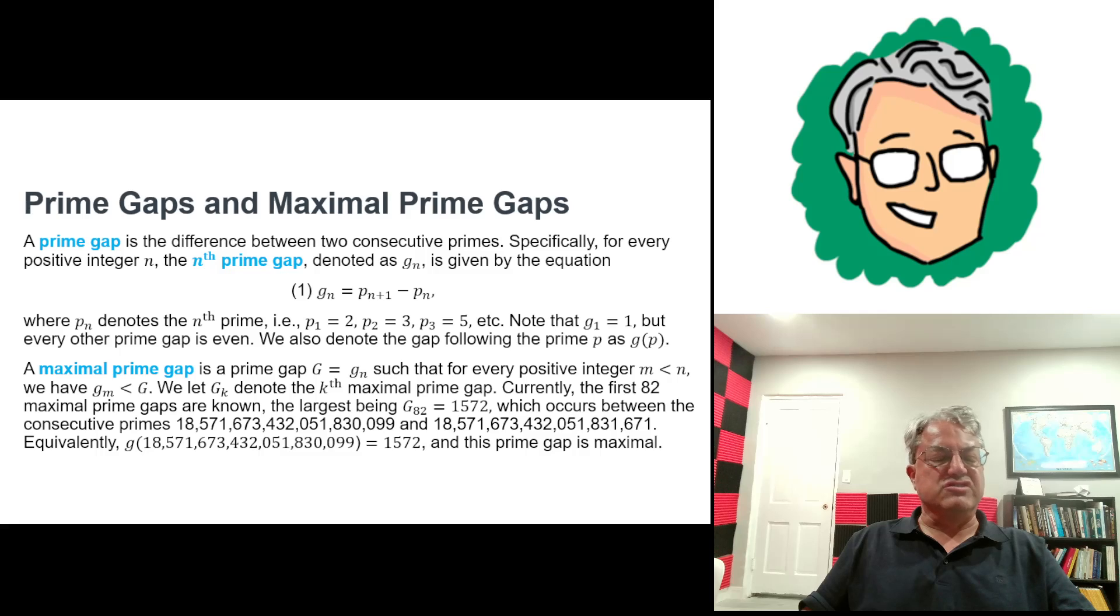But the biggest maximal, it turns out there's a total of 82. The first 82 maximal prime gaps are known. And I'll show you a table in a minute. But the largest known maximal prime gap is 1,572. And this occurs after a 20-digit prime. So all the primes have been tabulated up to this 20-digit prime, which is pretty amazing in and of itself. But it turns out that this particular prime, which I'm not going to read off here, has a maximal size prime gap following it, which in this case is 1,572.